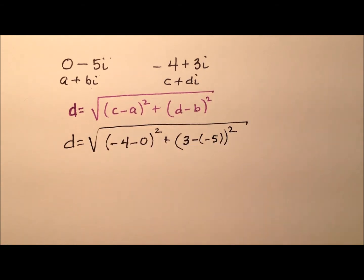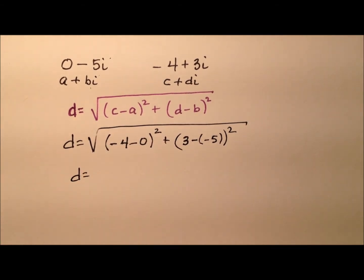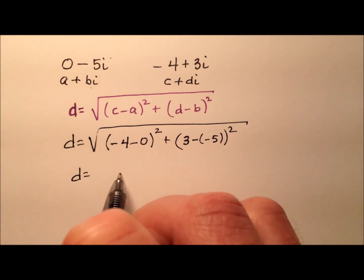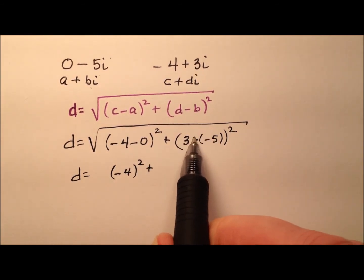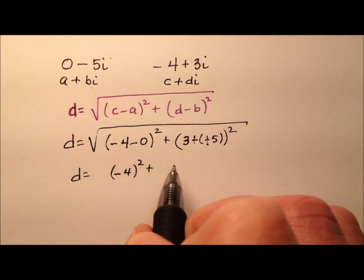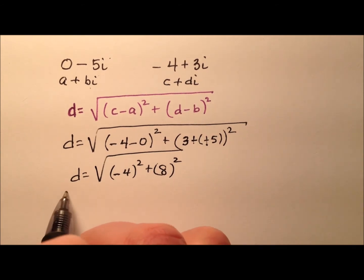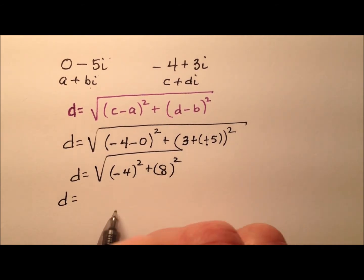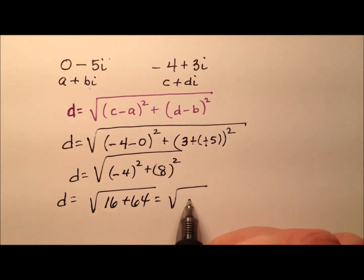And it's the square root of all that. Continuing to simplify: negative 4 minus 0 is negative 4, and 3 minus a negative 5 will be 3 plus 5, which will be 8. Square root of that. And continuing once again, 16 plus 64 for our squares, makes the square root of 80.